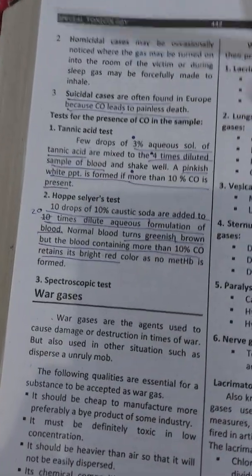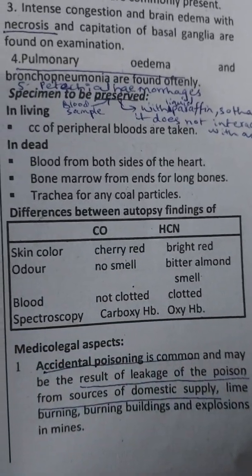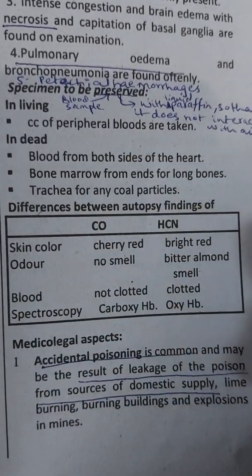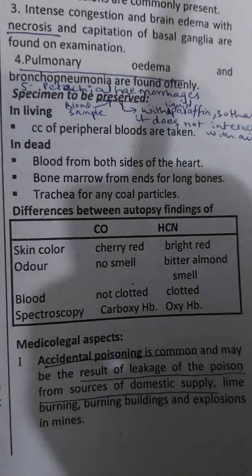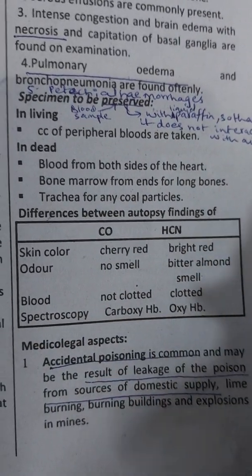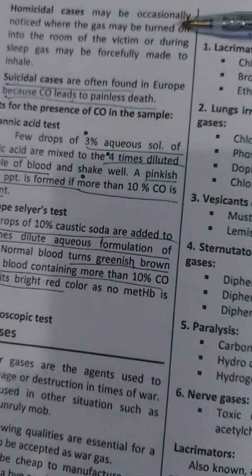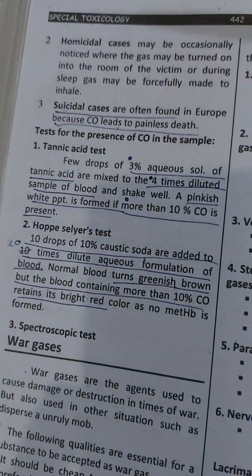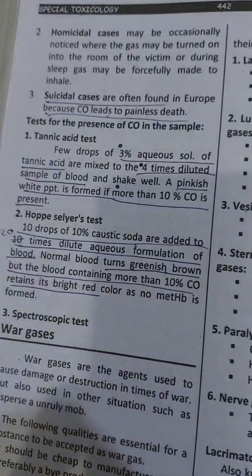If we talk about medico-legal importance: this is basically an accidental intake. Accidental cases occur due to leakage of carbon monoxide gas in homes or buildings — for example, if a hot water heater or gas heater is on. Homicidal cases are very difficult to see. Suicidal cases are more common because carbon monoxide causes a painless death, so it can be used as a suicidal poison.